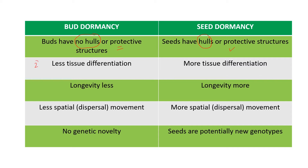If we look at the second point: in the case of buds, there is less tissue differentiation. But in the case of seeds, there is more tissue differentiation.